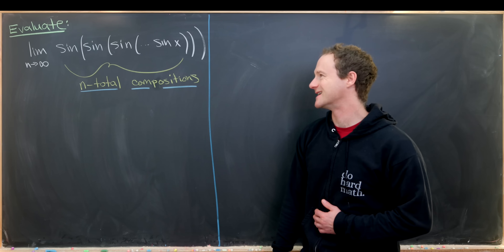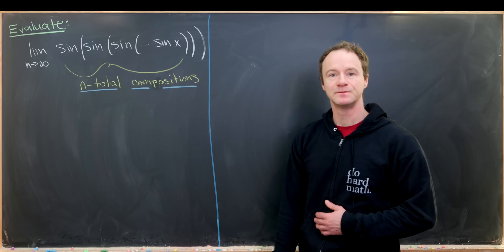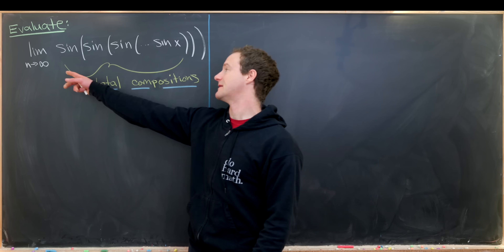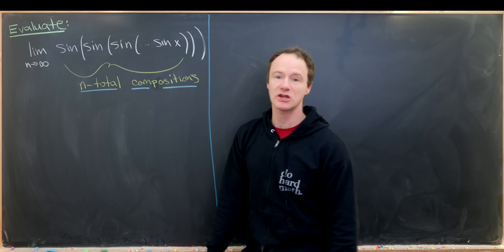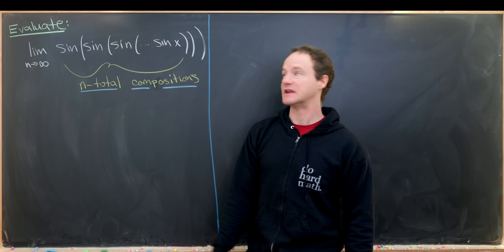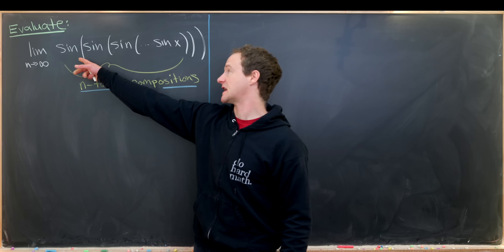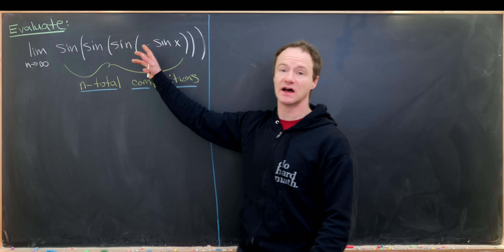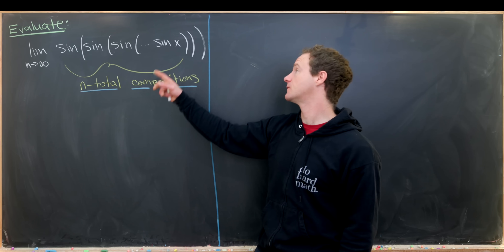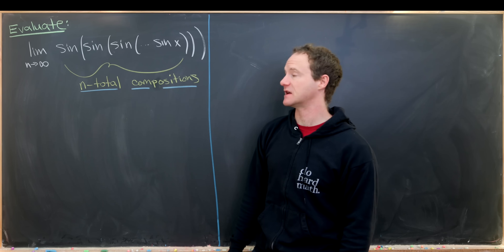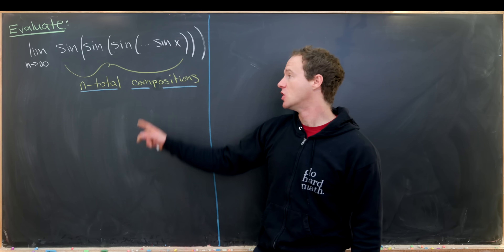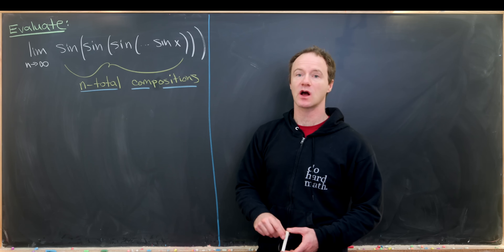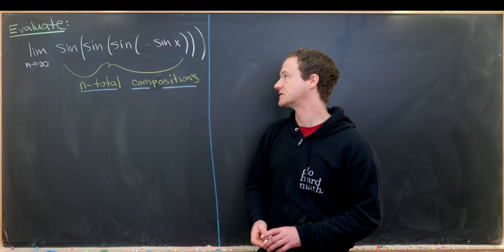Here we're going to calculate a nice limit. In particular, we're going to look at the limit as n goes to infinity of sine of sine of sine of sine, so on and so forth, of sine of x, where we have n total compositions.